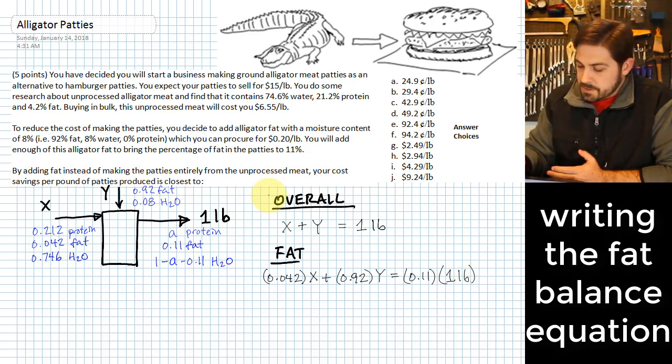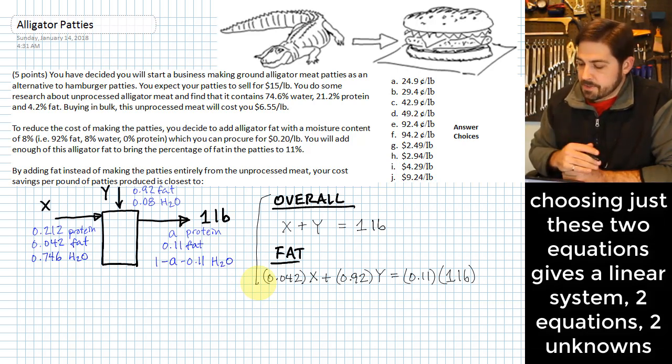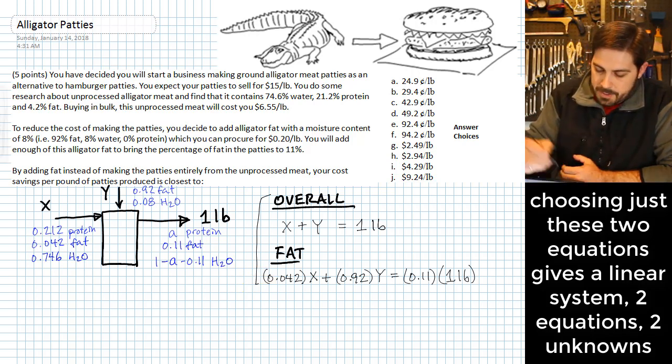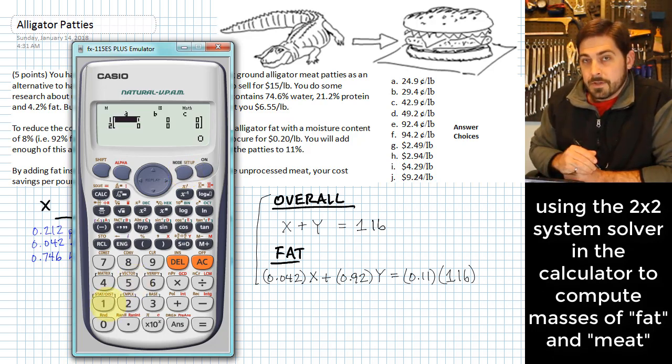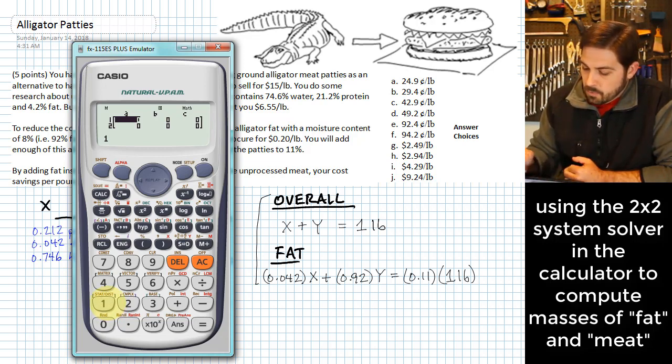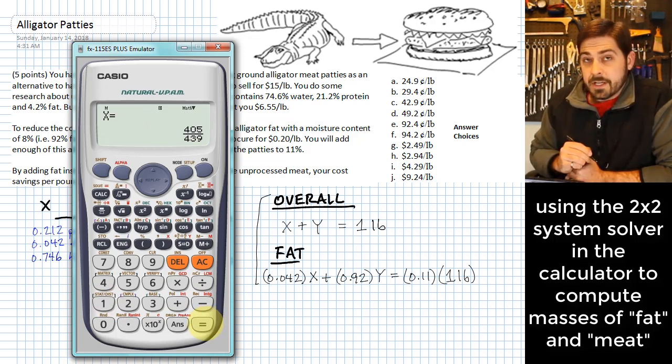And what you find here is that with just these two equations, we have figured out how much of the original meat material and then how much fat we need to solve this problem. So all we need to do at this point is punch these into a solver and many of your calculators will have a 2x2 solver built in. So I'm going to use this one in the Casio calculator. 1, 1. I'm putting in the coefficients for this first equation over here. And then 1. That's not too hard. And then the next one is 0.042. We have 0.92. And then we have, over on the right side, 0.11 times 1. And when I hit equals, what I get for X is 0.9225.